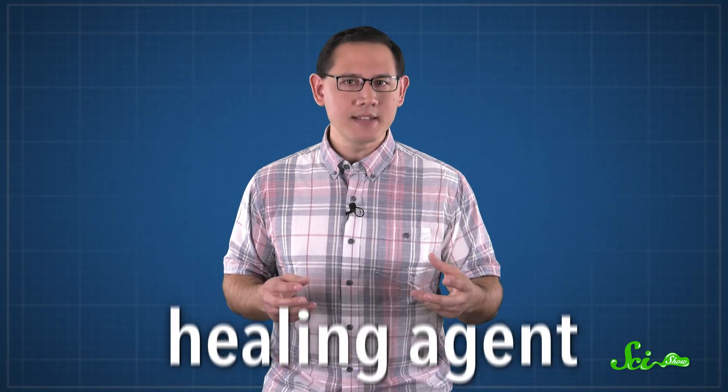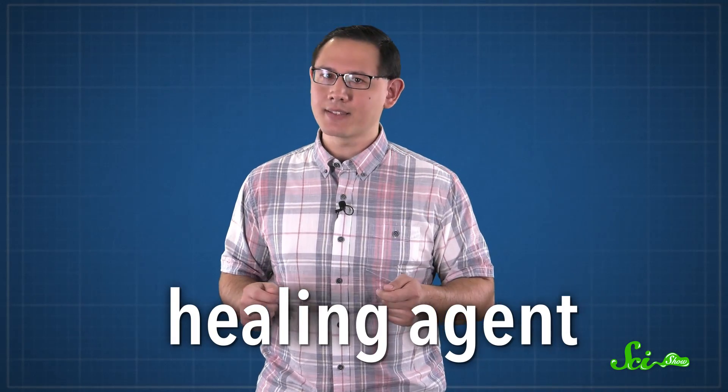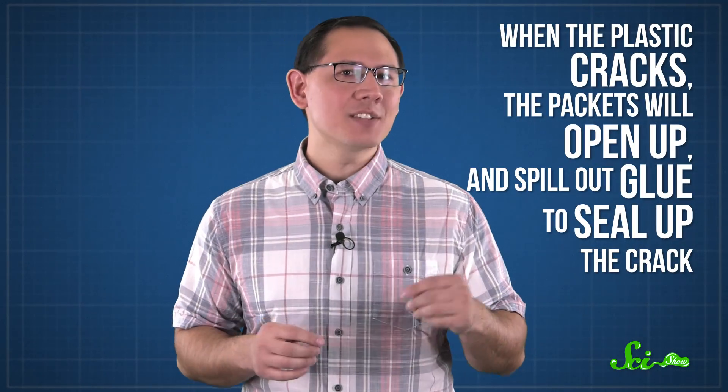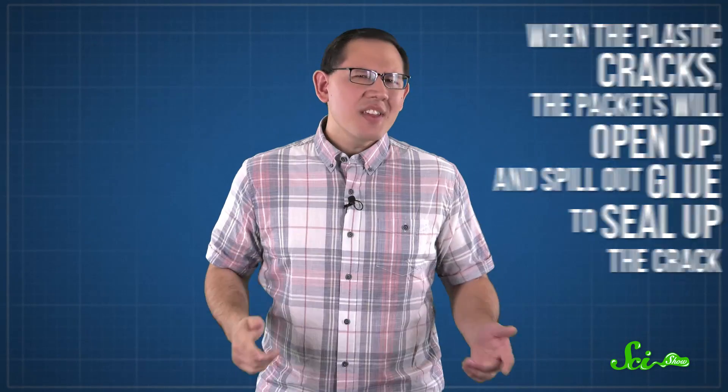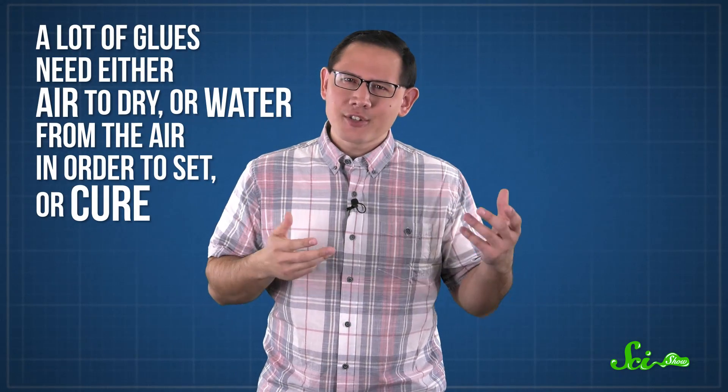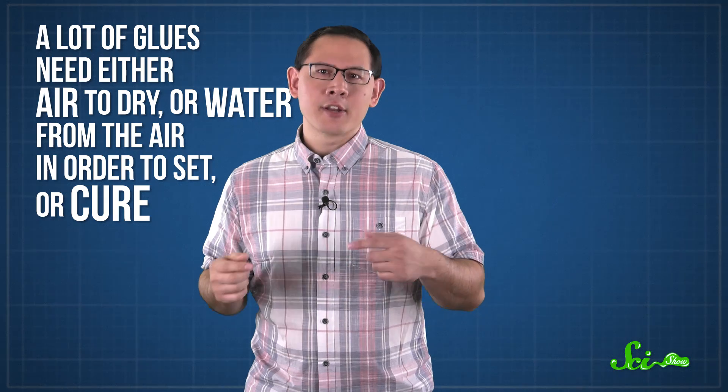And in the meantime, other researchers are taking a totally different approach to make self-healing plastics. The idea here is to mix tiny, tiny packets of a special glue, called a healing agent, into plastics and paints. Then, when the plastic cracks, the packets will open up and spill out glue to seal up the crack. The thing is, a lot of glues need either air to dry, or water from the air in order to set, or cure. But scientists can't rely on air or water always being around to get into every tiny crack. So they add a second chemical that helps the healing agent cure.